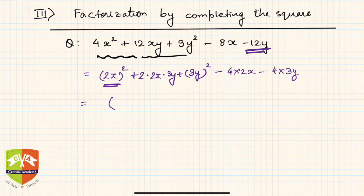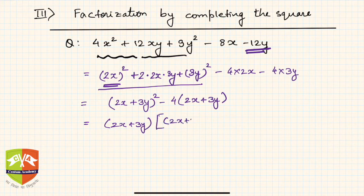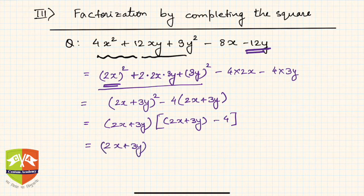Now what is the next step? (2x)² + 2 times 2x × 3y + (3y)² can be written as (2x + 3y)². And then -4(2x + 3y). So what do you get now? You get (2x + 3y) common, and within brackets you can write 2x + 3y - 4.